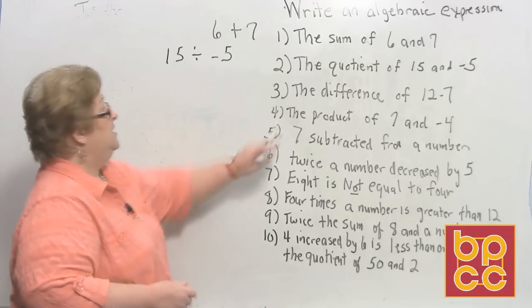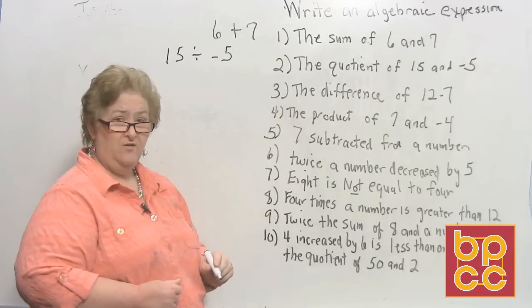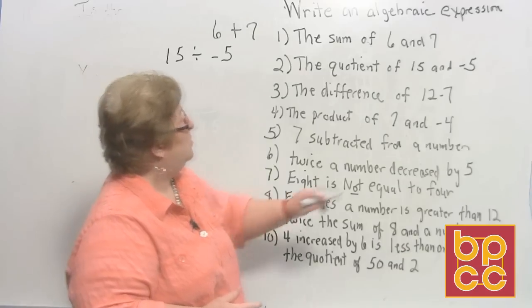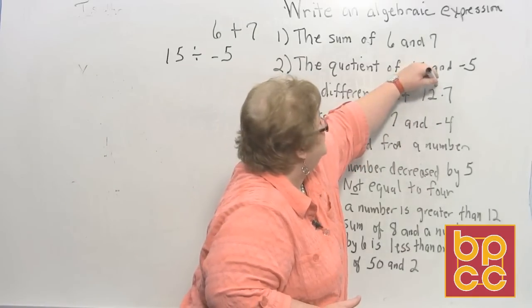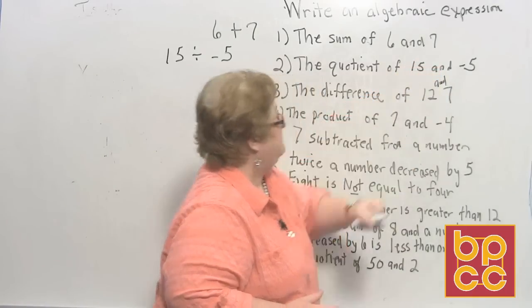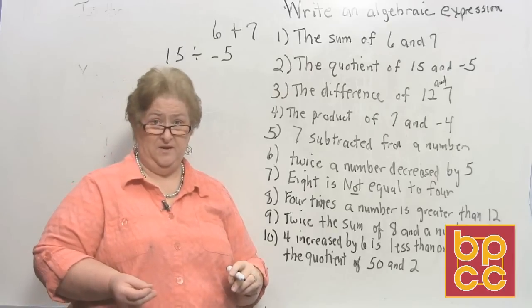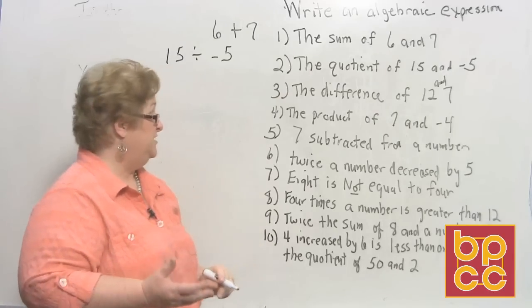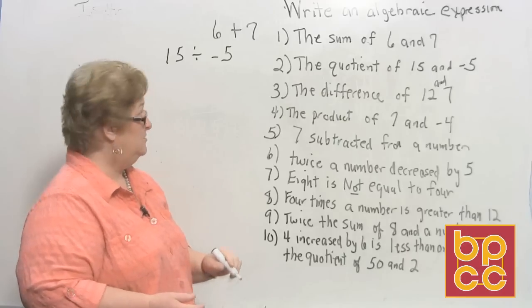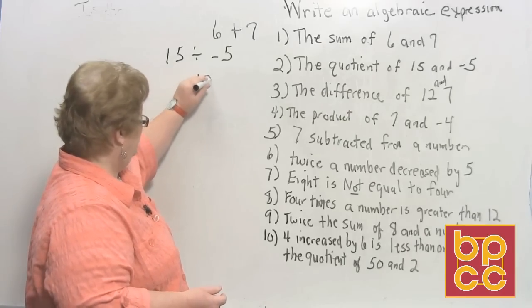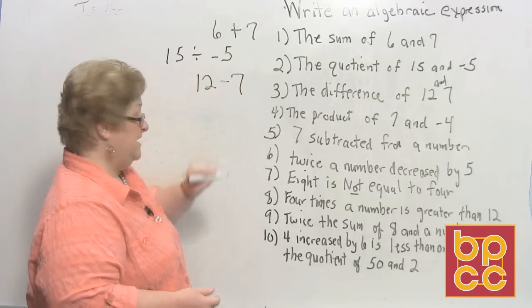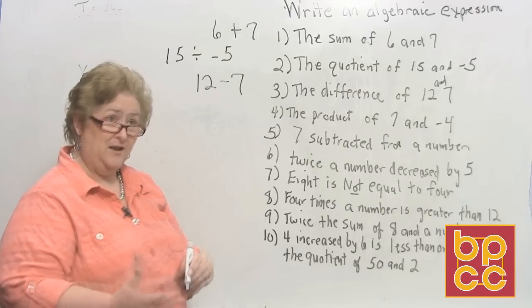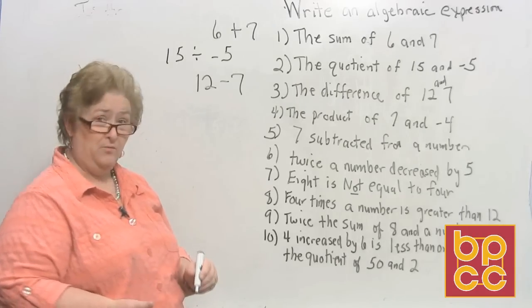Let's go to the third one: the difference of 12 and 7. Difference is the answer to a subtraction problem. So the difference of 12 and 7 would be 12 minus 7. I don't want to solve any of these — I just want to set them up and write them in algebraic form based on what I'm reading.